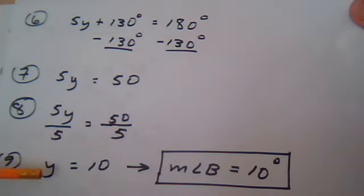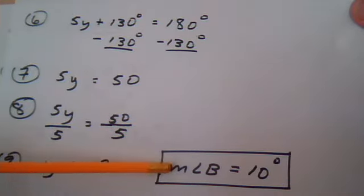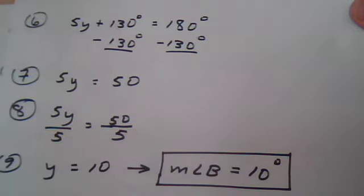So now we had said that Y was going to represent the measurement of angle B. So now we know that the measurement of angle B is 10 degrees.